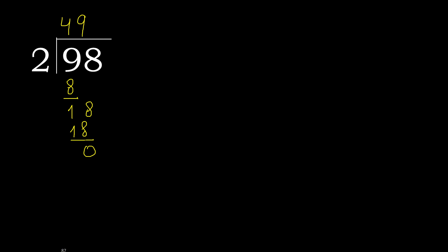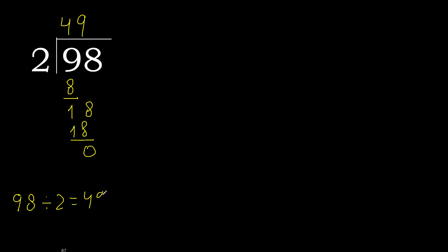0, and there is no next number, therefore we finish. 98 divided by 2 is 49.